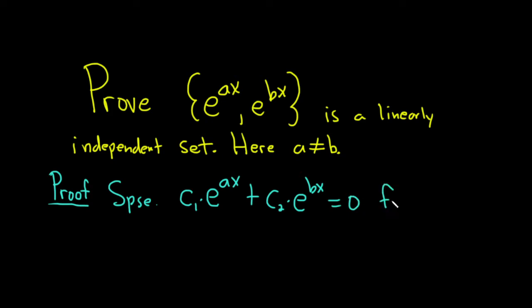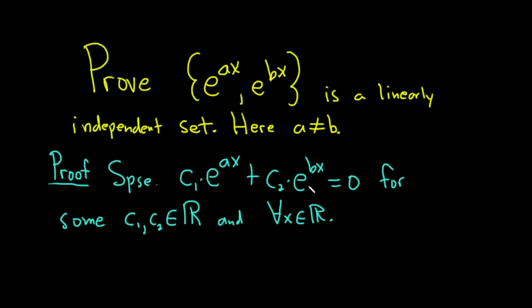that we have c1 times e to the ax plus c2 times e to the bx and this is equal to zero for some numbers c1, c2. Let's just say they're real numbers so they're inside the set of real numbers. And for all x in R. So we're going to prove they're independent over the entire real line. I probably should have specified the interval at the beginning. So we're just going to prove they're linearly independent on the entire set of real numbers.